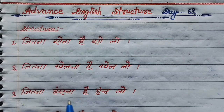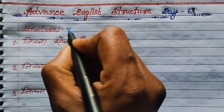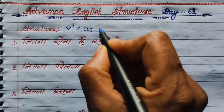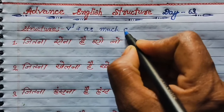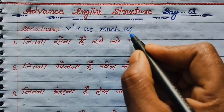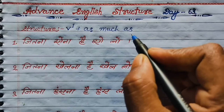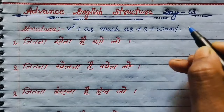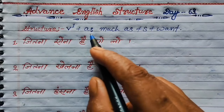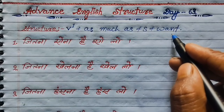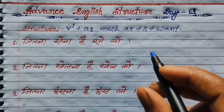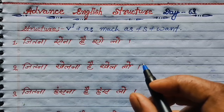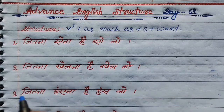तो पहले आपको structure को समझना है। तो guys, first of all, आपको word की first form का use करना है। Word की first form, then as much as — मतलब जितना — then subject, then want. तो guys, आपको इस structure को याद रखना है। जब भी आपको इस तरह के sentences को बोलना हो, तो आप इसी structure को follow करेंगे। तो चलें, बिना देरी किए, sentence बनाना सीखते हैं।